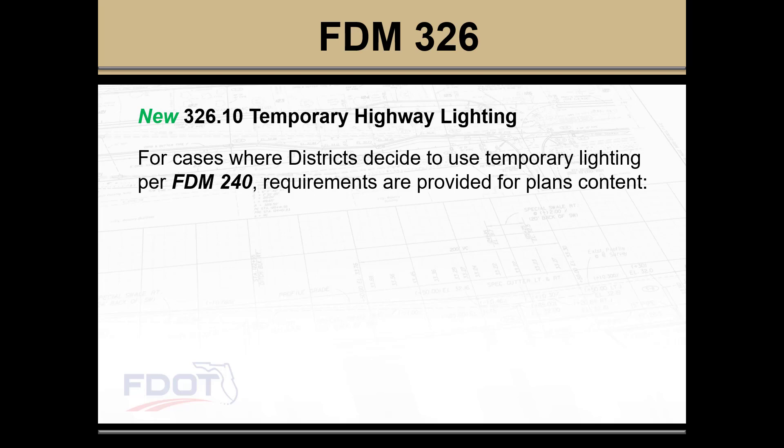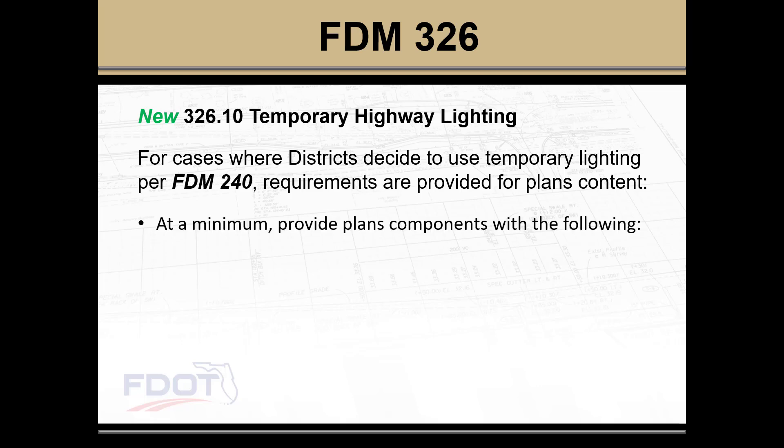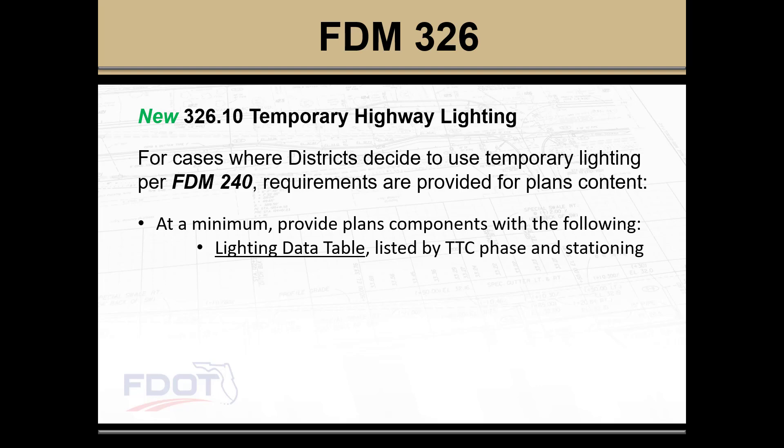We have an all-new Section 326.10 Temporary Highway Lighting. Note that temporary highway lighting is not required, but this is for cases where districts decide to use temporary lighting per FDM240. For this case, requirements are now provided for plans content. At a minimum, designers will provide a Lighting Data Table listed by Temporary Traffic Control Phase and Stationing. Please note that multiple TTC phases may be listed per row to save space, assuming that nothing changes between phases.